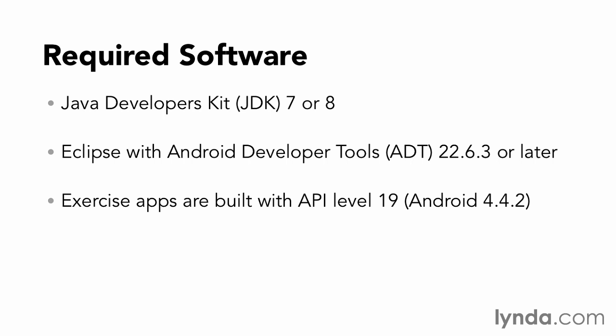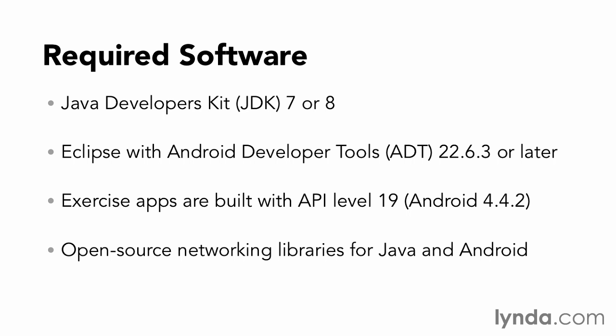The applications are all built with API Level 19, or Android 4.4.2, KitKat. In addition, I'll be using some open-source networking libraries for Java and Android. Don't worry about those right now — I'll show you where to get them and how to integrate them into your projects when we get to those sections of the course.